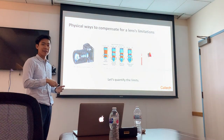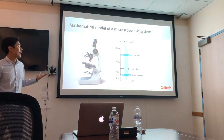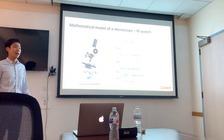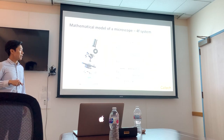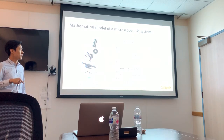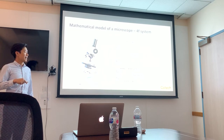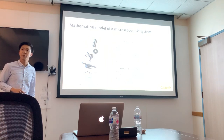Now let's quantify the limits of this aberration. A typical microscope system is a 4F system, which consists of two lenses — an objective lens and a tube lens — separated by their focal lengths. In the middle there is an aperture. Below the objective lens you have your sample plane, and above your tube lens you have your image plane.